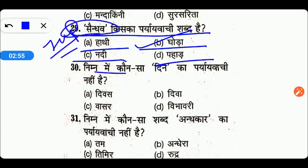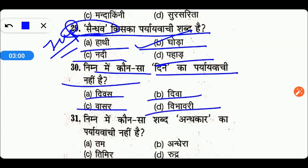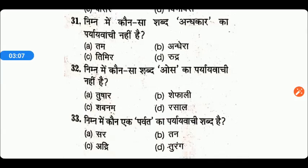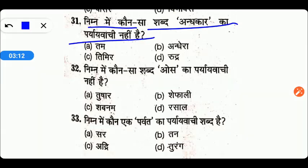Next: which of the following is not a synonym for 'day'? Options are Divas, Diva, Vasar, or Vibhavari. Next: which word is not a synonym for darkness? Options are Tam, Andhera, Tamir, or Rudra.